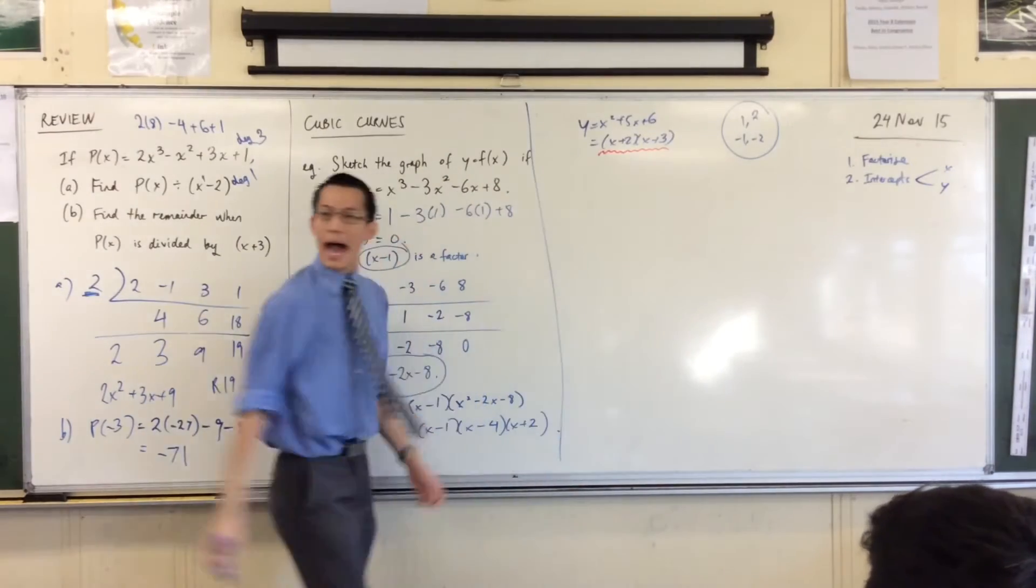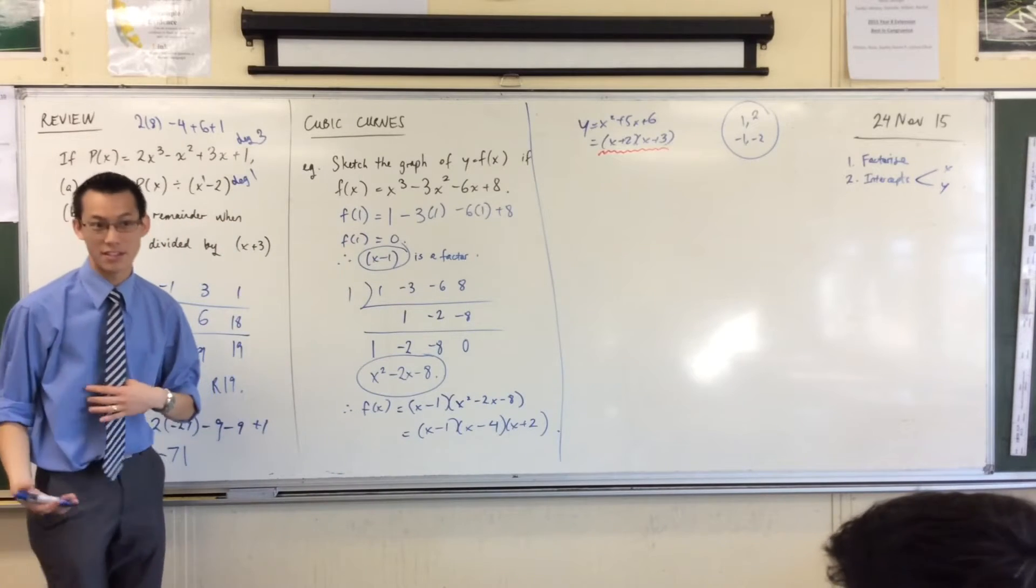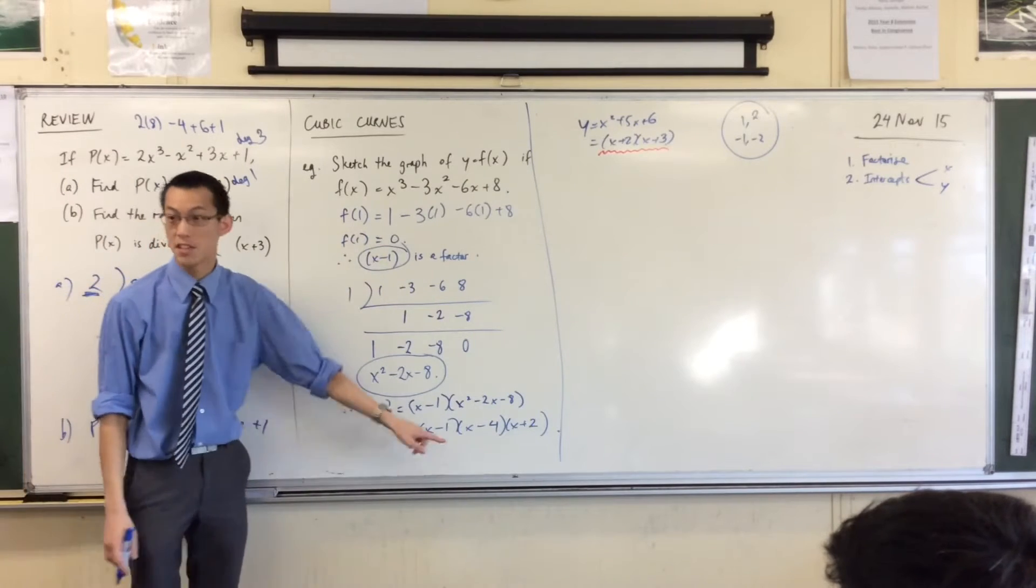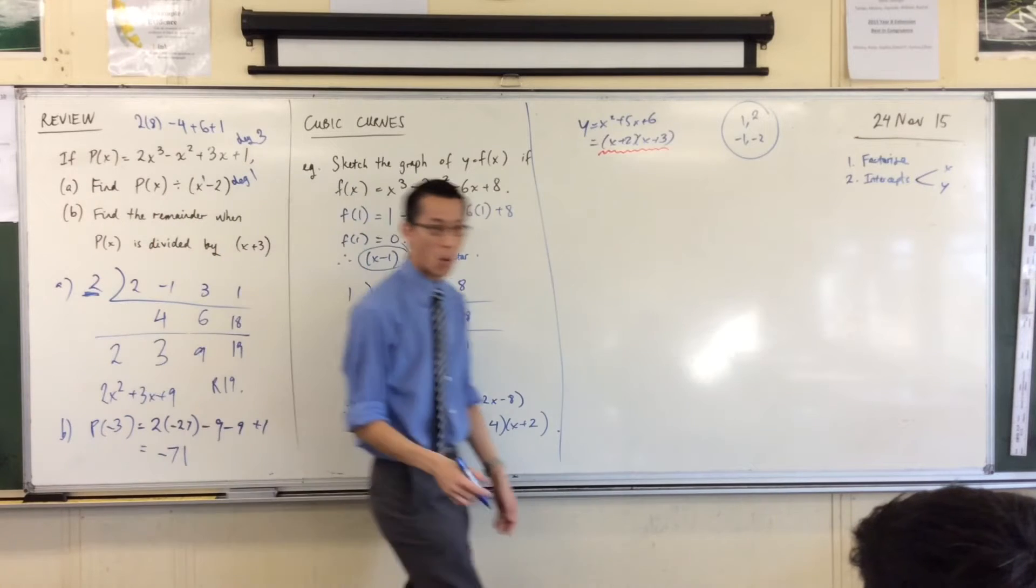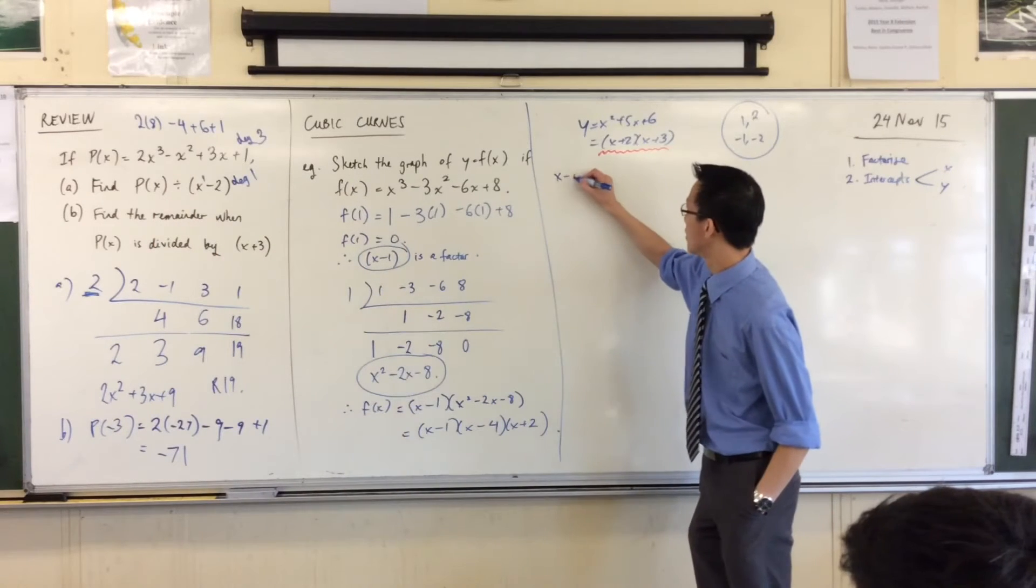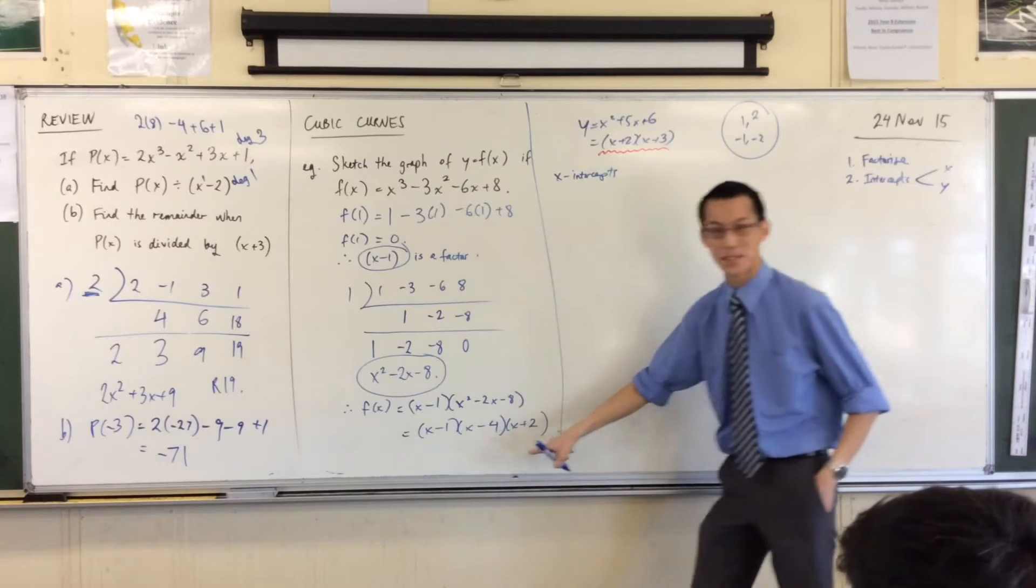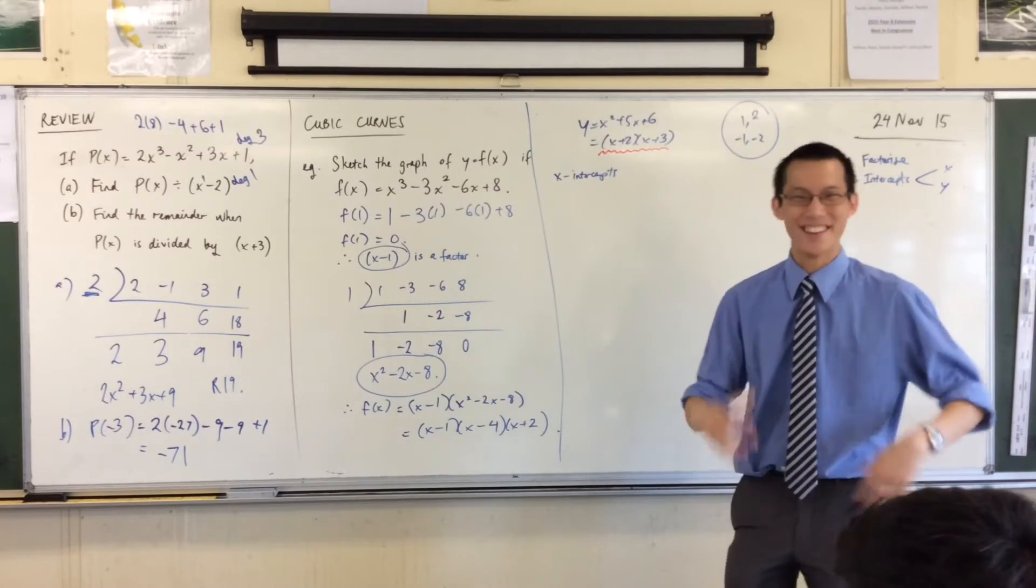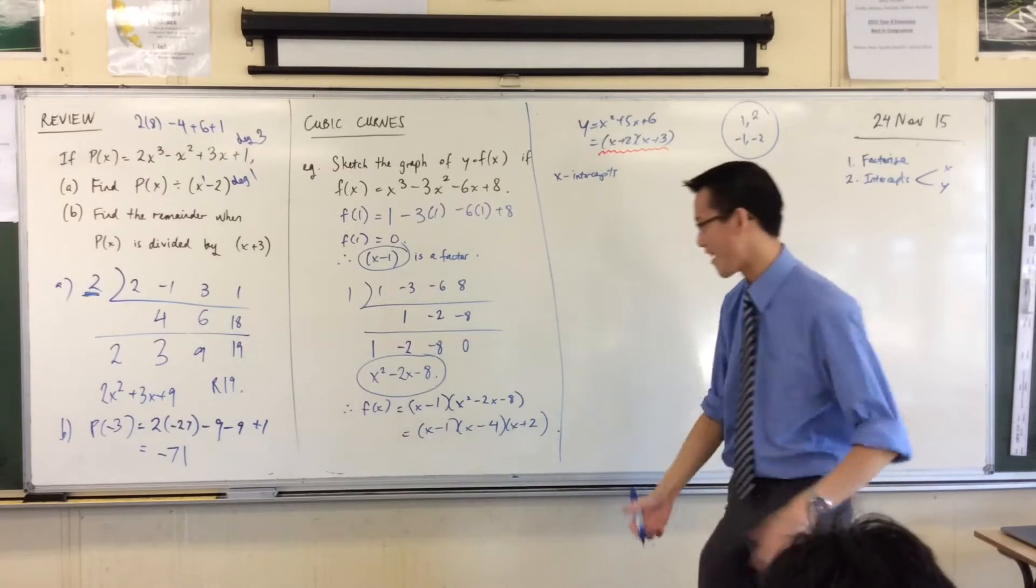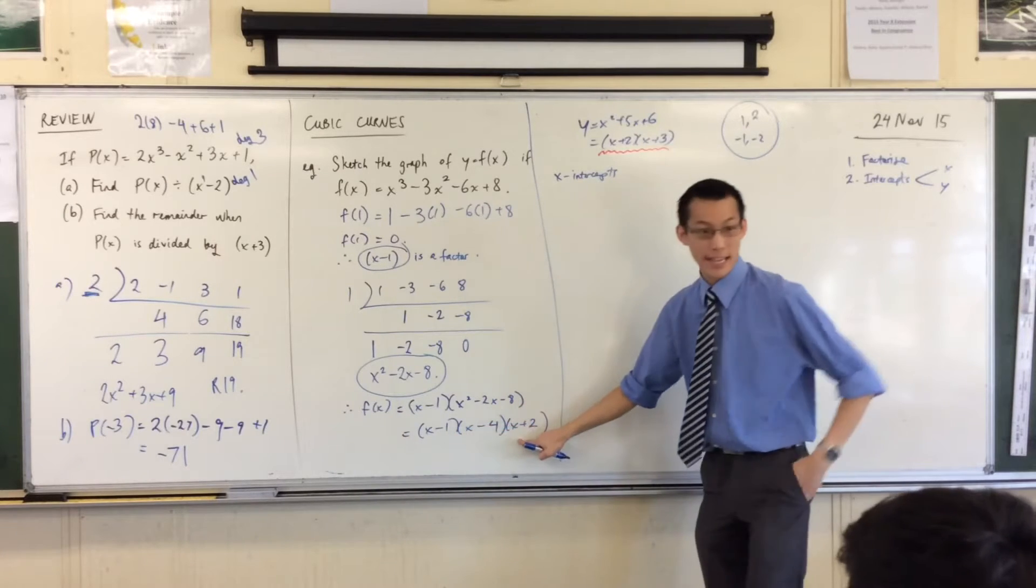So how do I find the x-intercepts? The x-intercepts are kind of easy ones. I did this whole process so I can find them. What are the x-intercepts? 1, 4, minus 2. Perfect. You look at the opposites of these numbers. Are you sick of me saying this yet? You're always looking at those opposites. 1, 4, negative 2. Perfect.